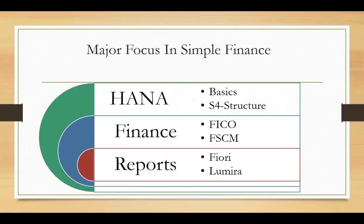You need to understand FICO at a mandatory level, FSCM which includes credit, collections, and disputes, and treasury and risk management to integrate bank data with cash management. Third is Reports - you need to understand Fiori and how it integrates with Simple Finance apps, and Lumira, which is used to structure graphical reports. These three areas - HANA basics, Finance (FICO/FSCM/TRM), and reporting tools (Fiori and Lumira) - form the complete package of Simple Finance apps.